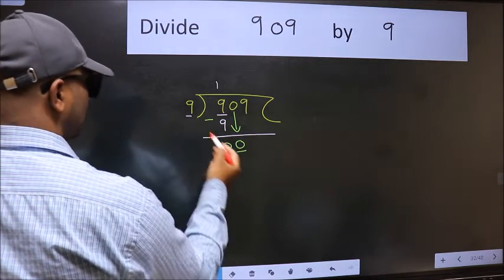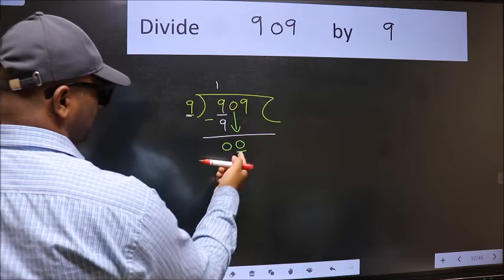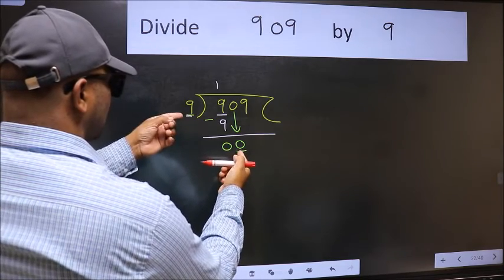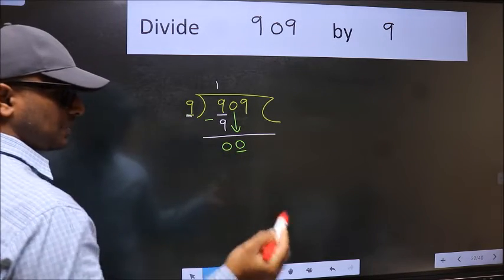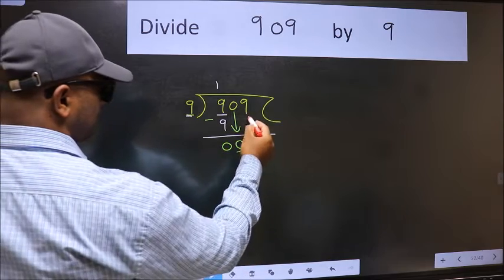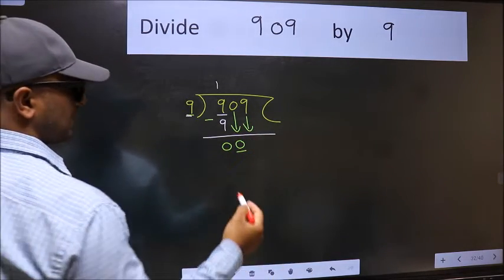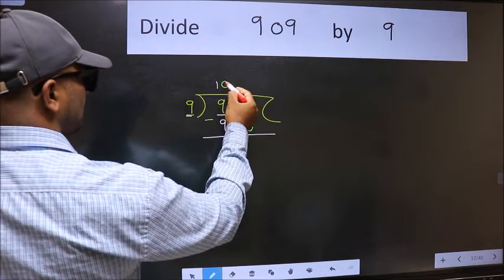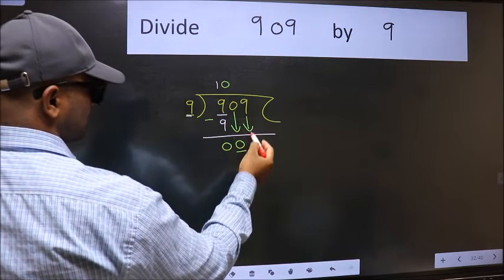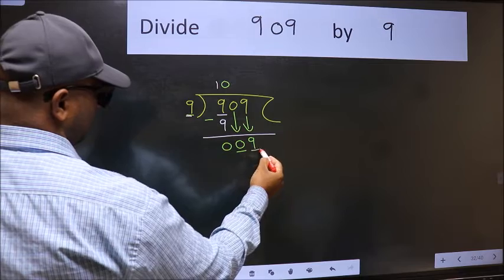Now here we have 0 and here 9. 0 is smaller than 9. So we should bring down the second number. And the rule to bring down second number is we should put 0 here. Then only we can bring this number down.